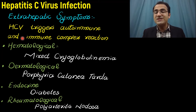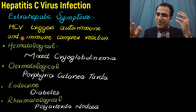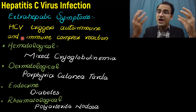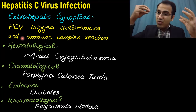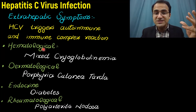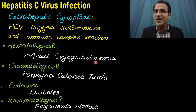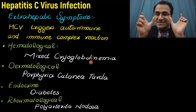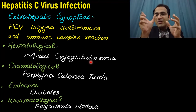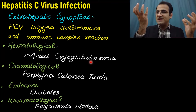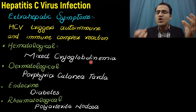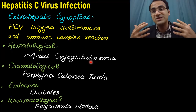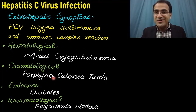Patients with chronic HCV develop extra-hepatic manifestations. HCV triggers the immune system, causing an autoimmune reaction. Due to immune complex deposition in the hematological system, you see mixed cryoglobulinemia — remember: C for cryoglobulinemia. In cryoglobulinemia, IgG antibodies and rheumatoid factor antibodies bind to themselves and deposit in vessels.